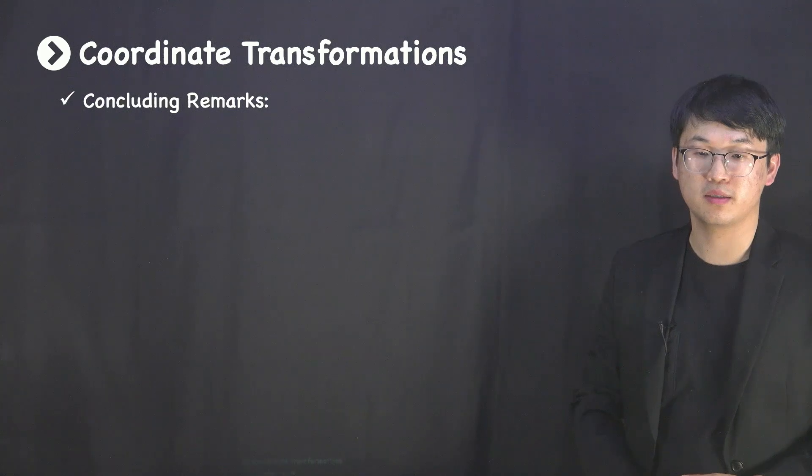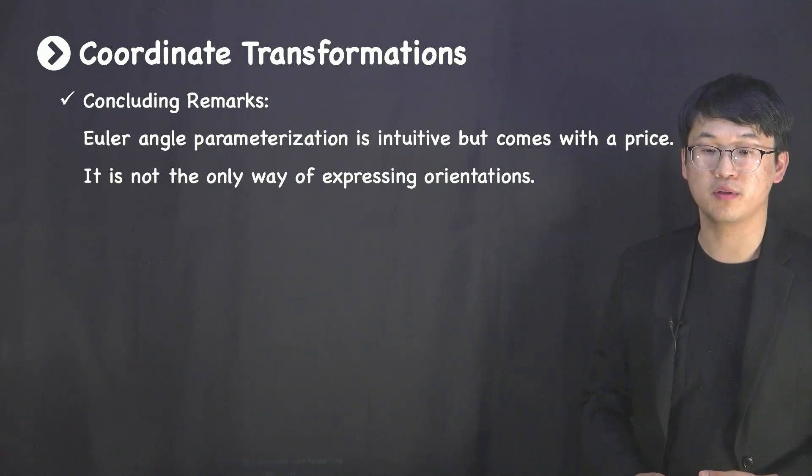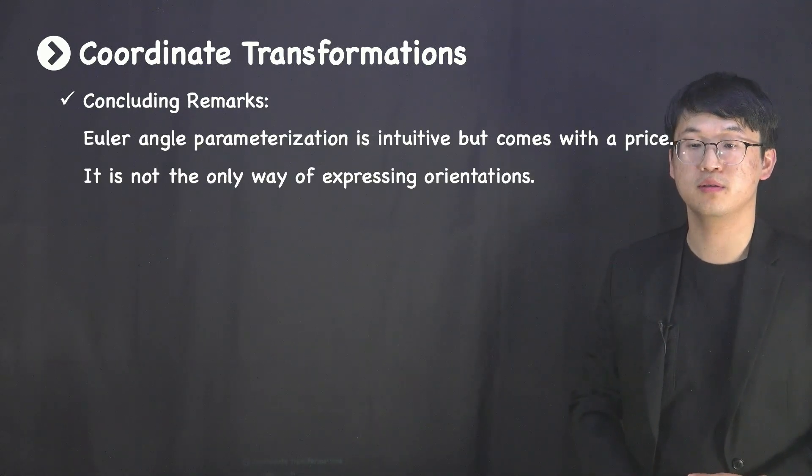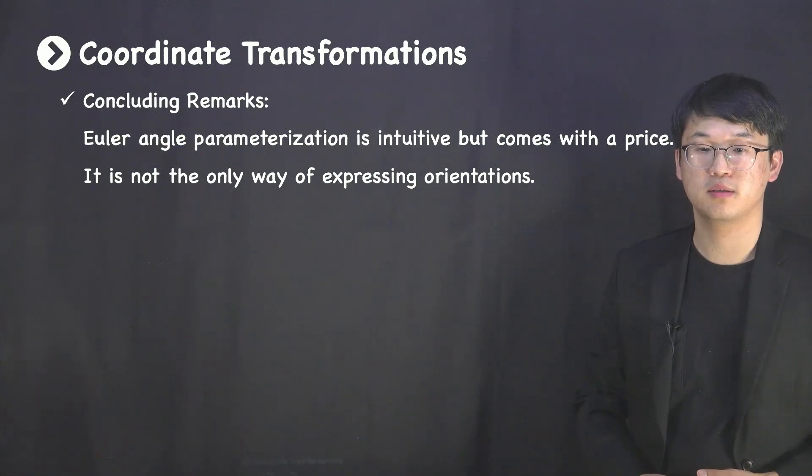As concluding remarks, I'd like to say that the Euler angles are not the only way to represent orientations. It is an intuitive way of understanding coordinate transformations, yet parameterization comes with a price, like wrapping or singularities.